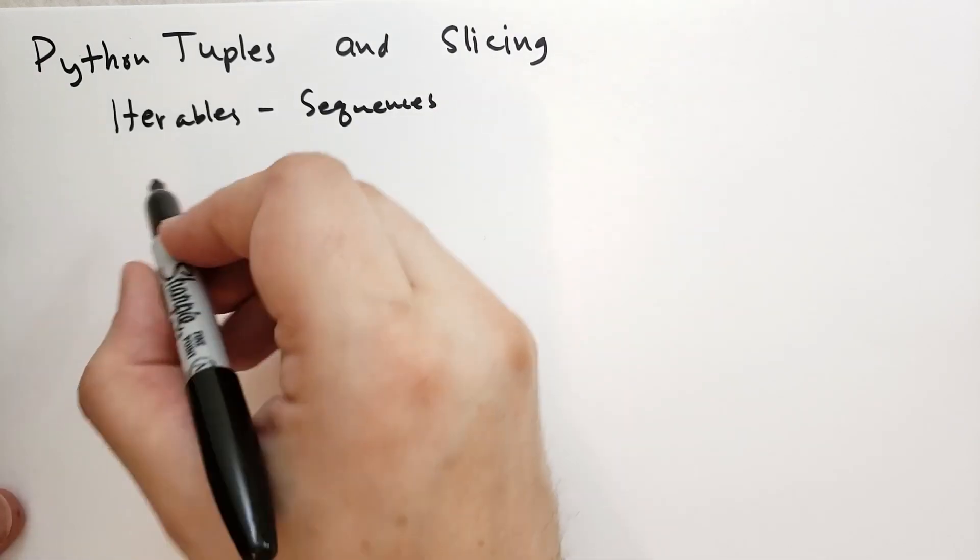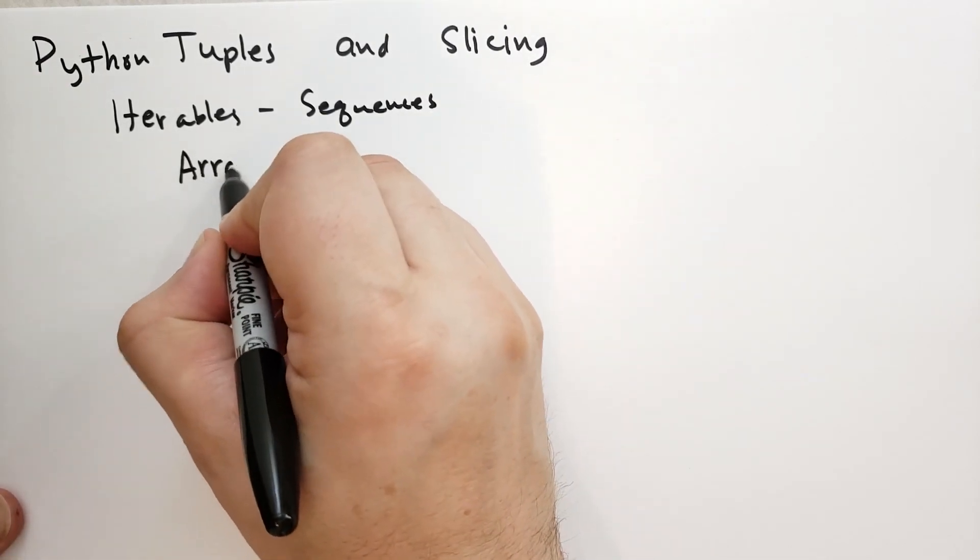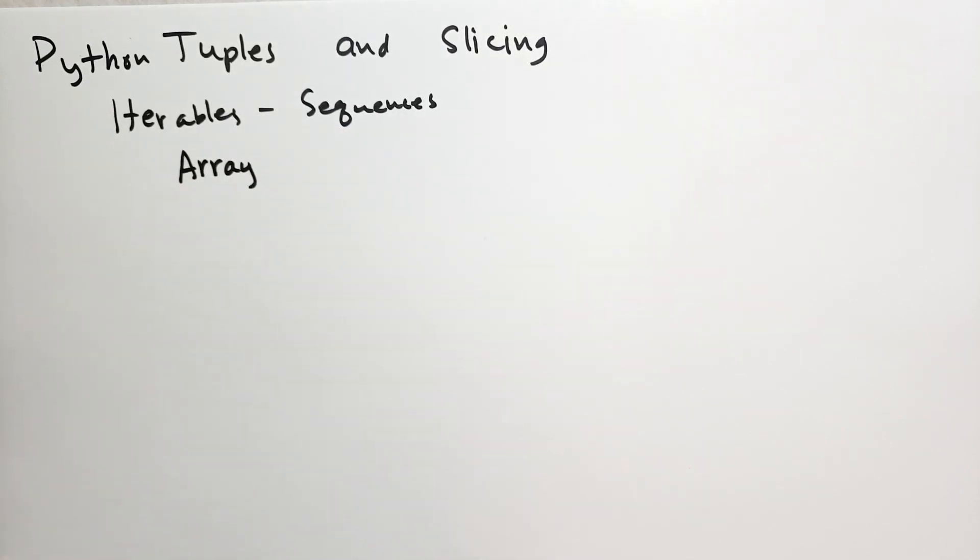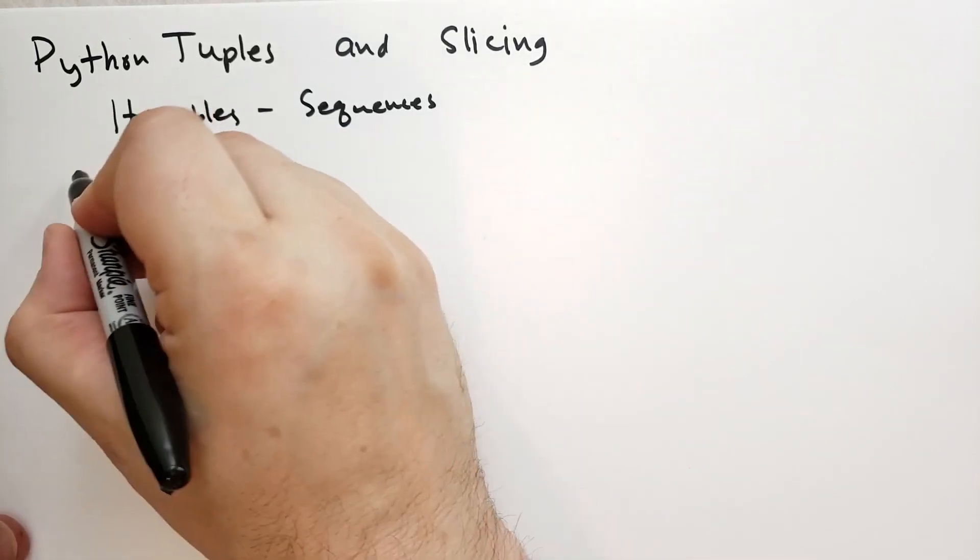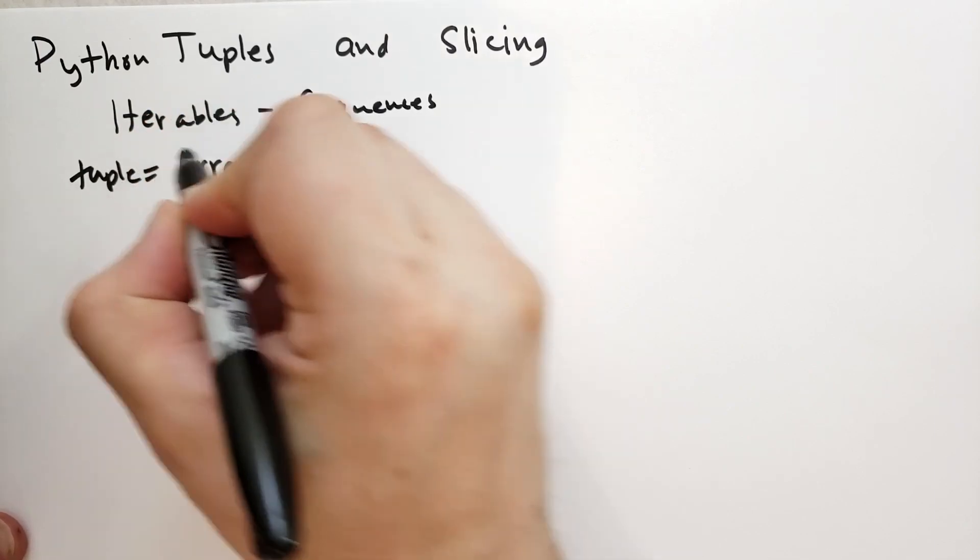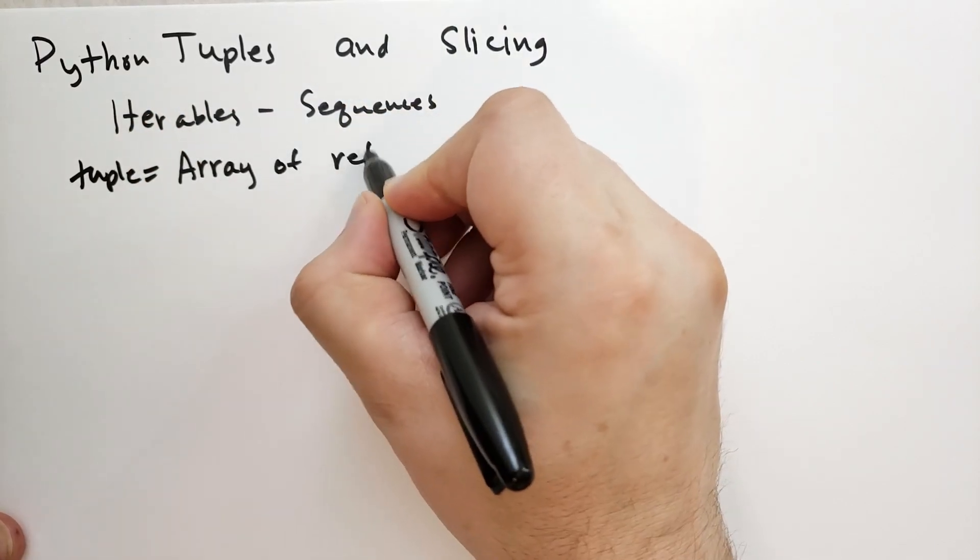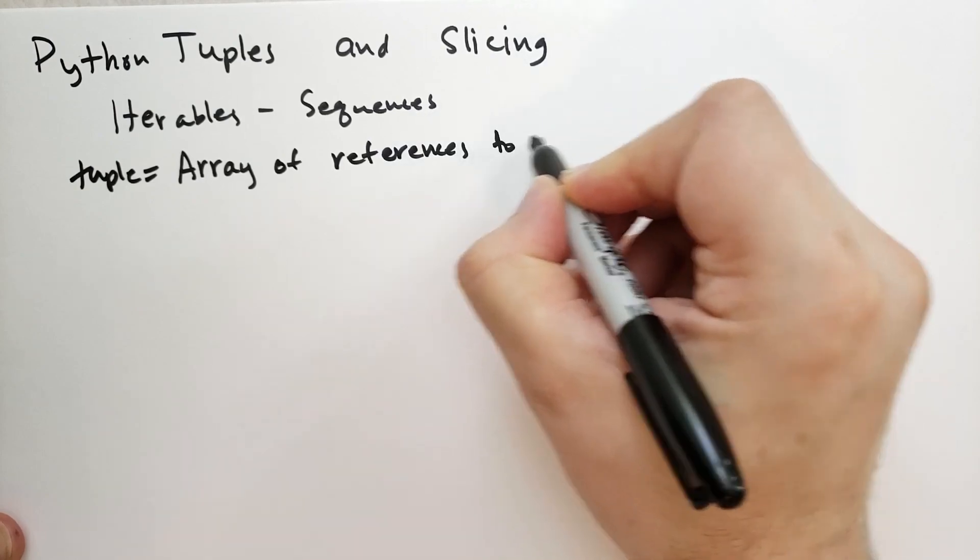And this introduces one of the fundamental concepts in computer science, which is the concept of the array. A tuple is an array of references to Python objects.